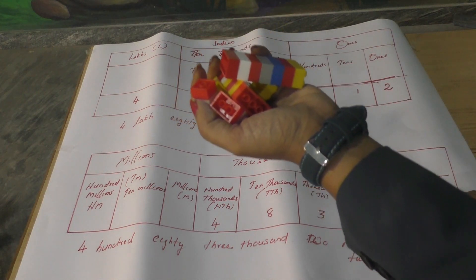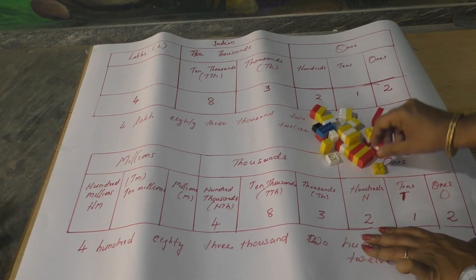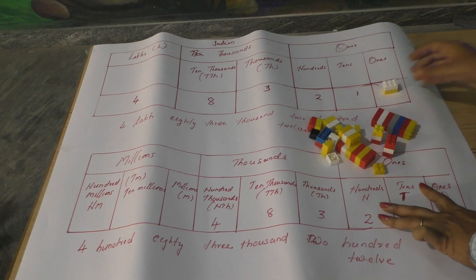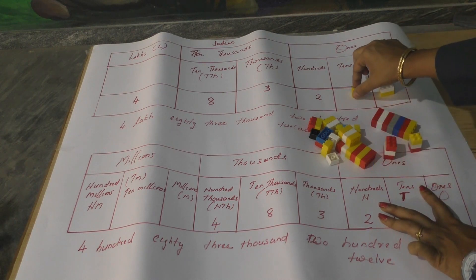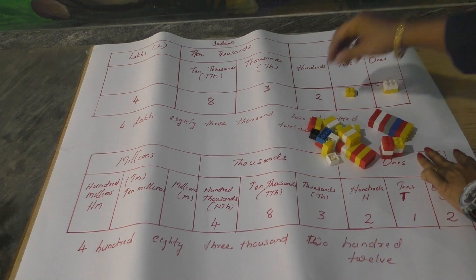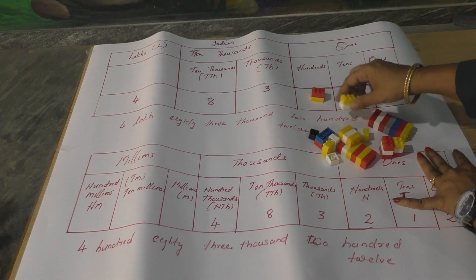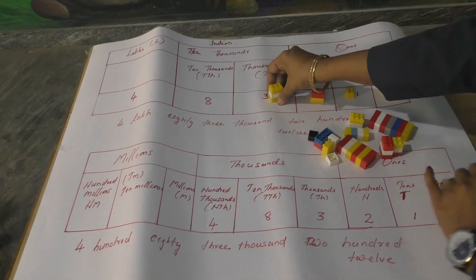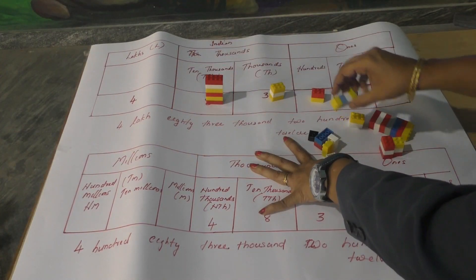Each block represents a number. How many blocks at the ones place? The ones digit is two, so we keep two blocks. At the tens place, we keep one block. At the hundreds place, we keep two blocks. At the thousands place, we keep three blocks. At the ten thousands place, we keep eight blocks. At the lakhs place, we keep four blocks.